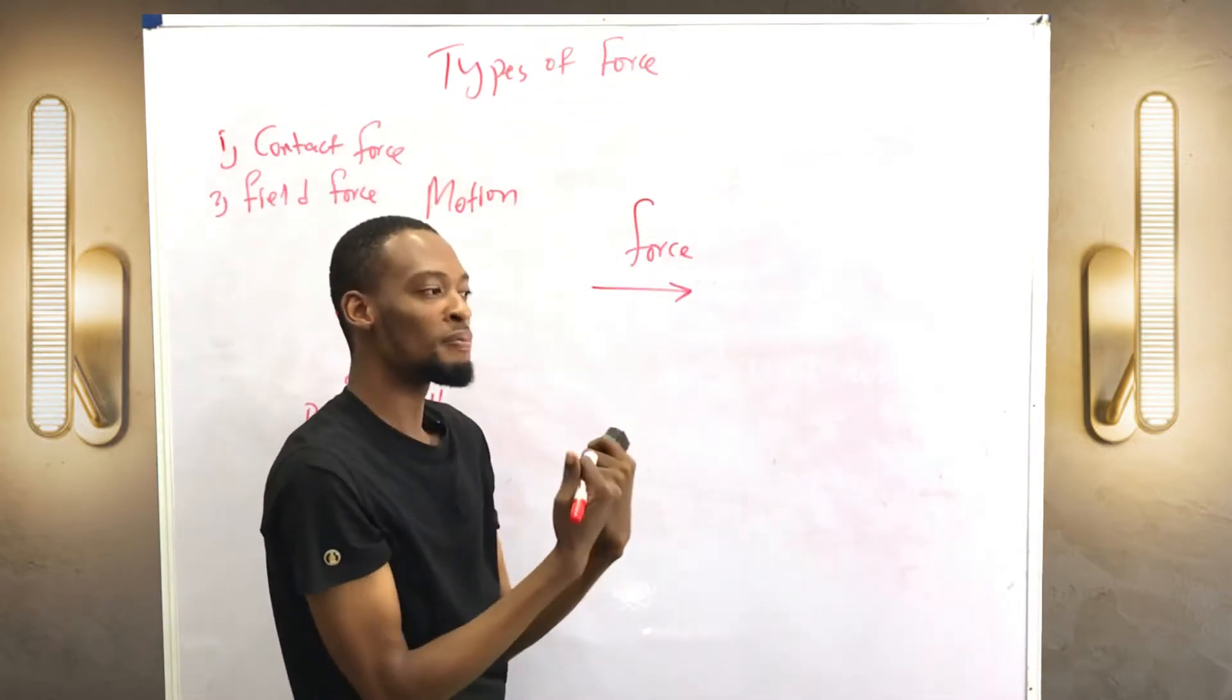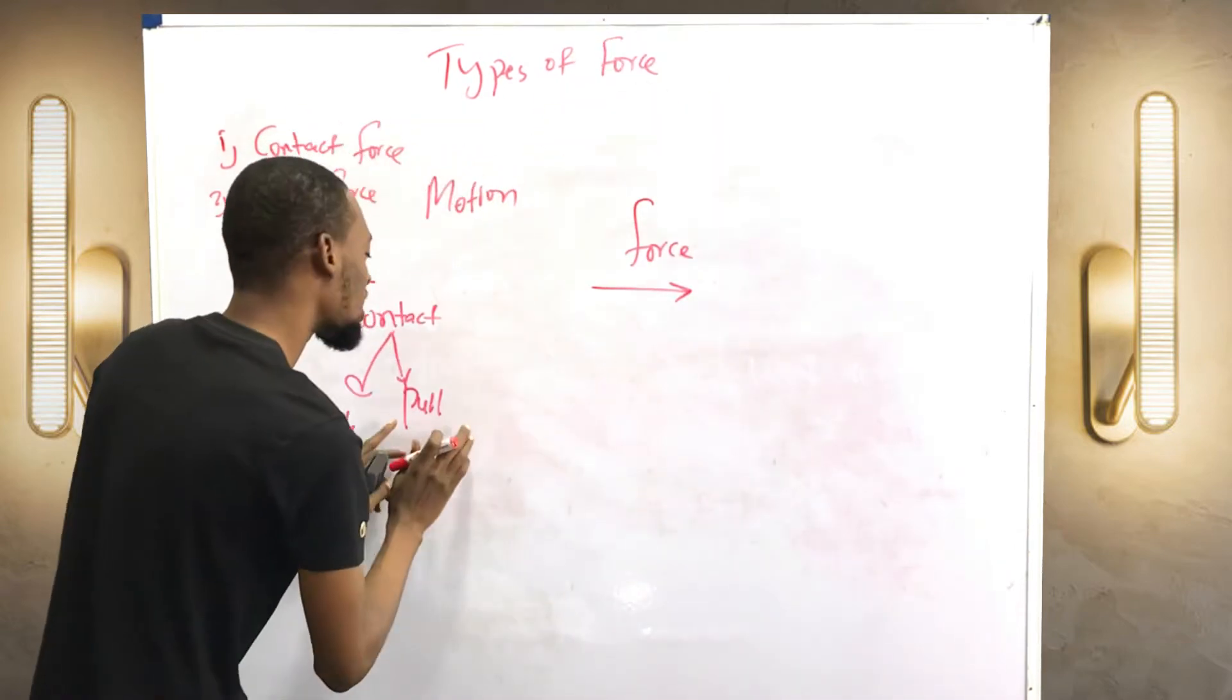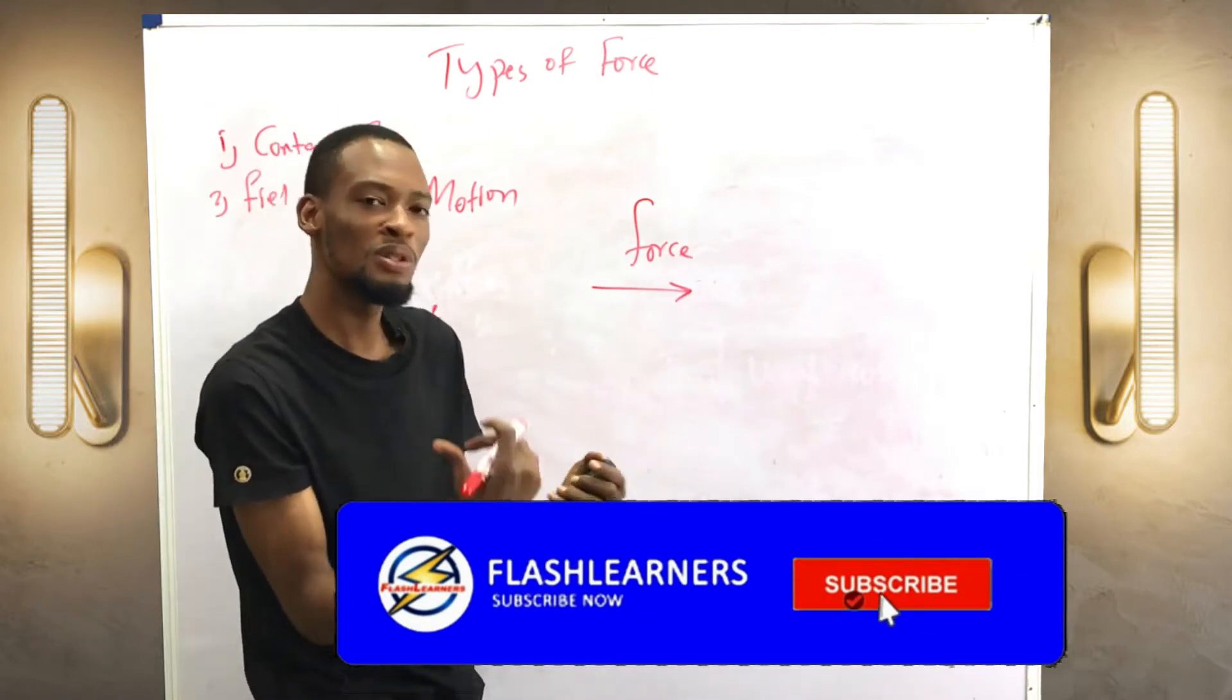So when I tell the person don't leave me, you are pulling the person down. So you are not pushing, you are pulling. That's a contact force because there is contact between you and the person.